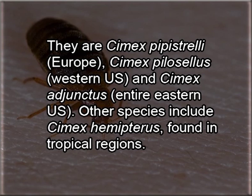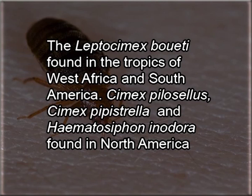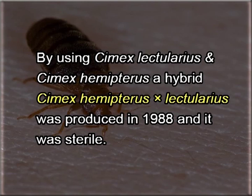Other species include Cimex hemipterus found in tropical regions, Leptocimex boueti found in the tropics of West Africa and South America, Cimex pilosellus, Cimex pipistrella, and Haematosiphon inodora found in North America. By using Cimex lectularius and Cimex hemipterus, a hybrid Cimex hemipterus versus lectularius was produced in 1988 and it was sterile.